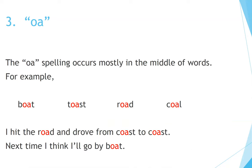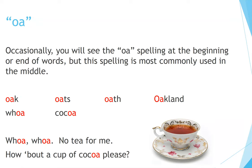Number 3: OA. The OA spelling occurs mostly in the middle of words. For example: boat, toast, road, coal. I hit the road and drove from coast to coast. Next time, I think I'll go by boat. OA — occasionally you will see this spelling at the beginning or end of words, but it is most commonly used in the middle.